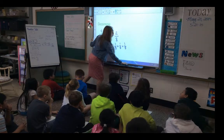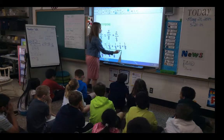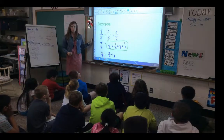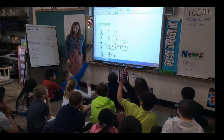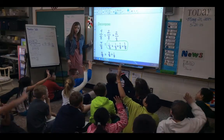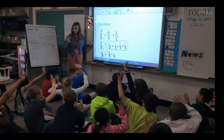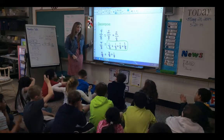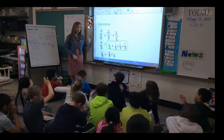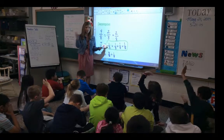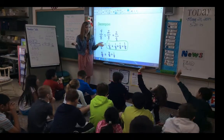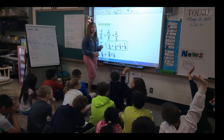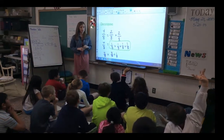Let's take a look at this one: one-eighth plus one-eighth plus one-eighth plus one-eighth. How many one-eighths do we have? Show me with your fingers. We have four. How can we write this as a multiplication sentence? We know repeated addition is one way we can solve multiplication problems — how could we transfer this into writing a multiplication sentence?